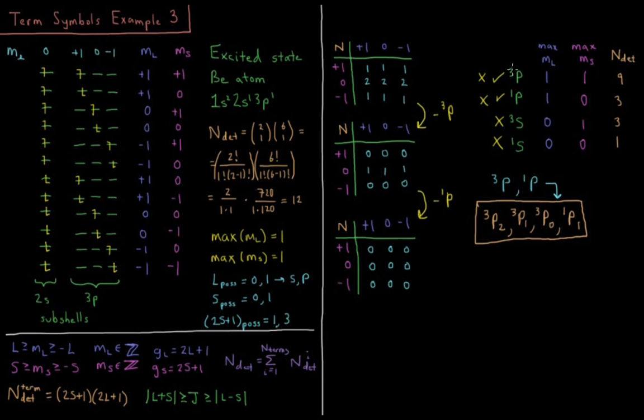I'm going to list my term symbols in decreasing order of L in the outer loop and decreasing order of S in the inner loop. You can reverse which one is outer and inner. Just make sure that they're both descending as you go. So we'll start with triplet P. Triplet P has a value of L equals 1, S equals 1. So max M sub L equals 1, max M sub S equals 1. So is there a value of 1, 1 in my table? Yes, there is.